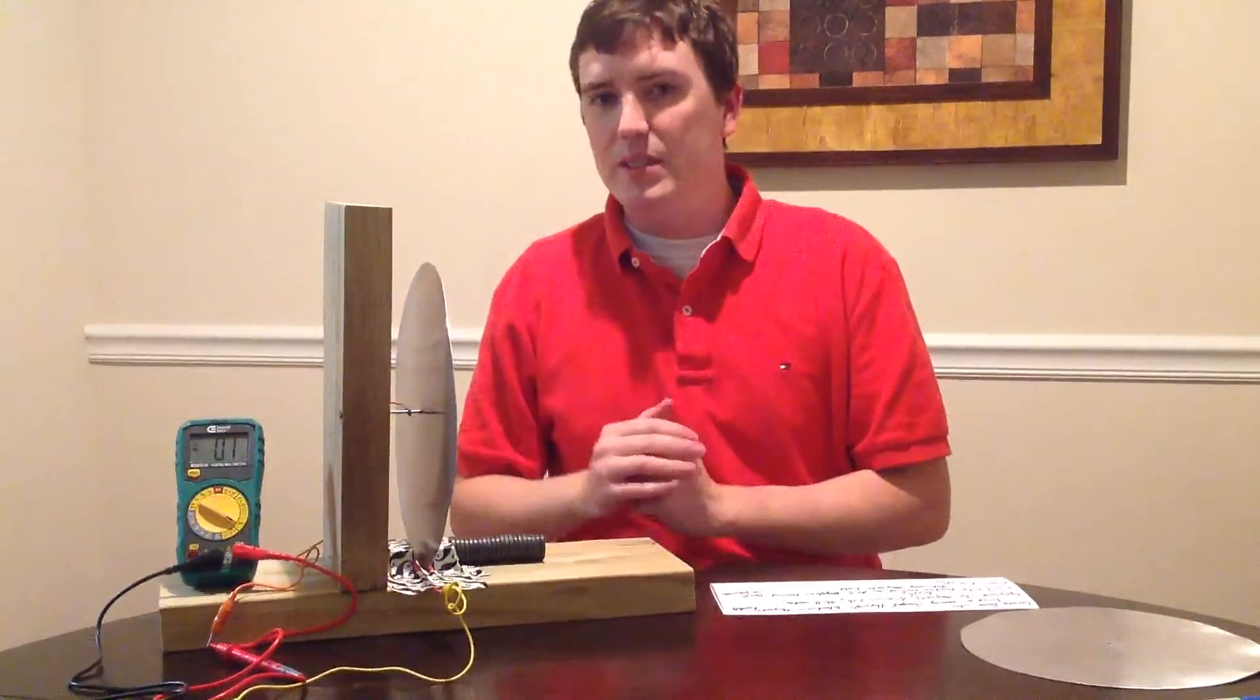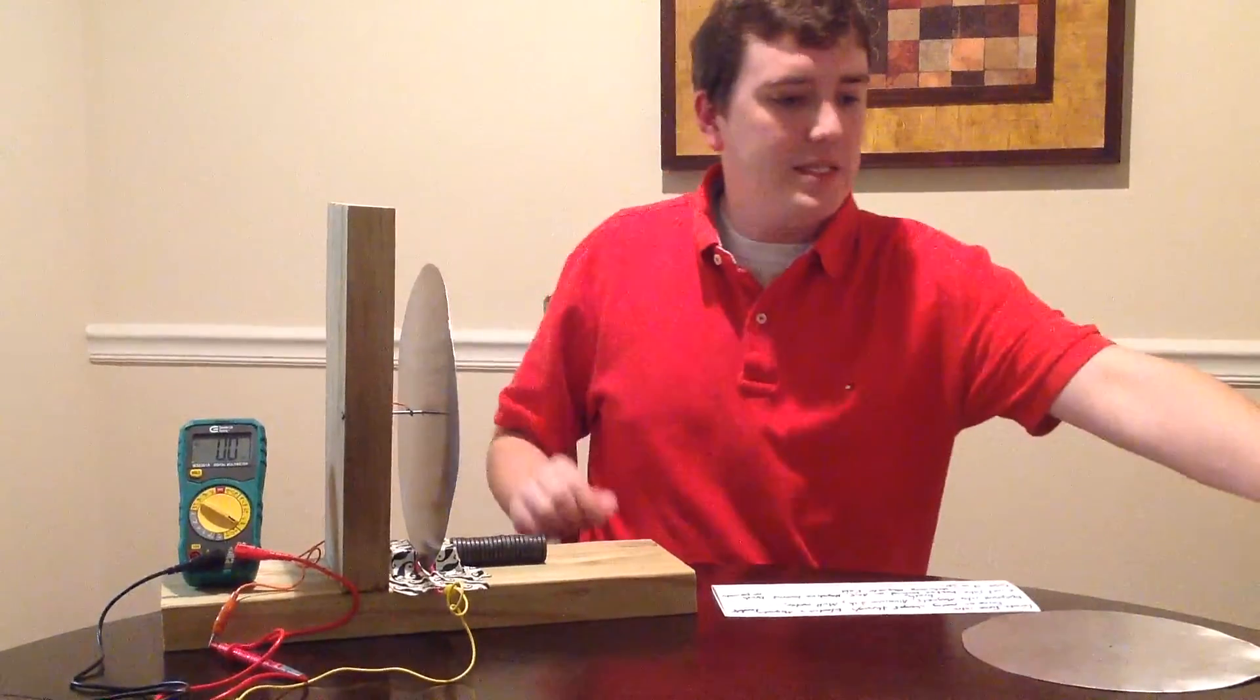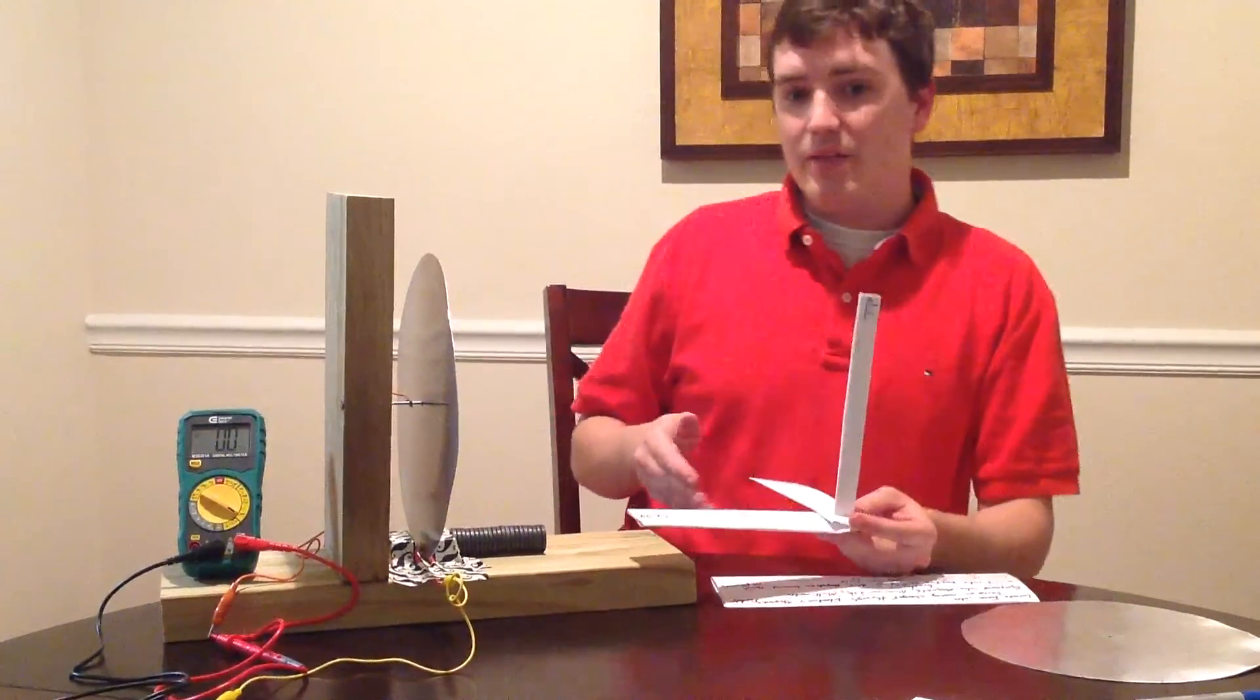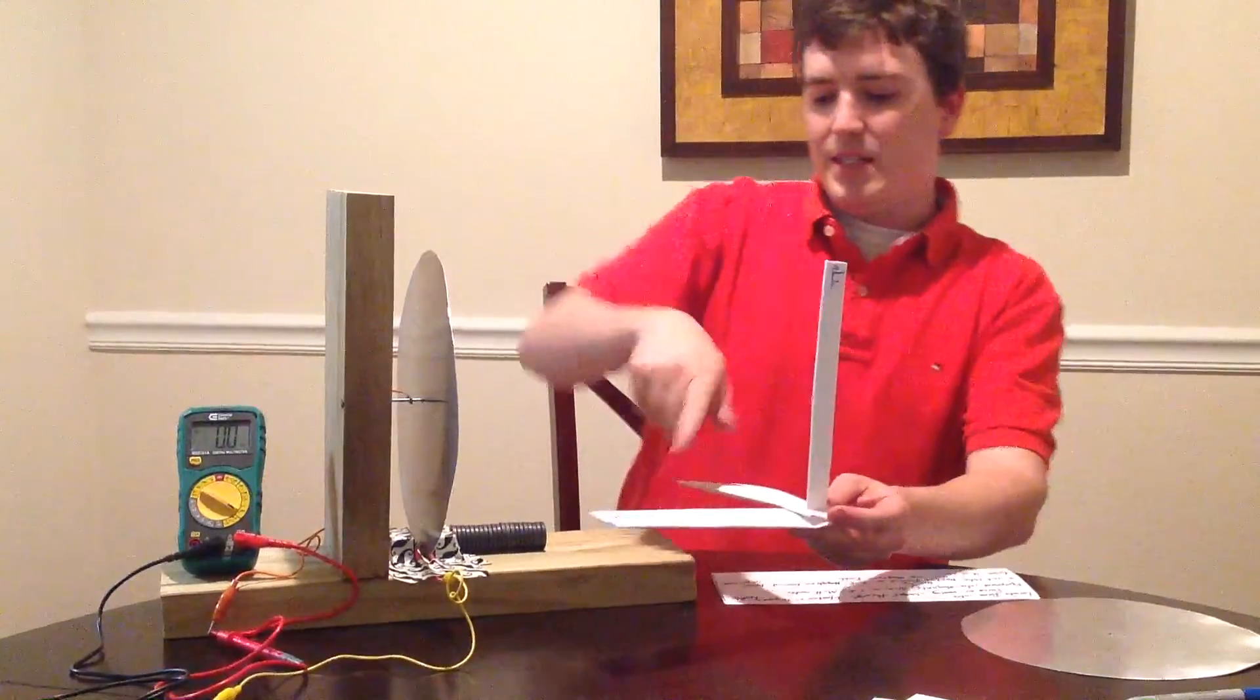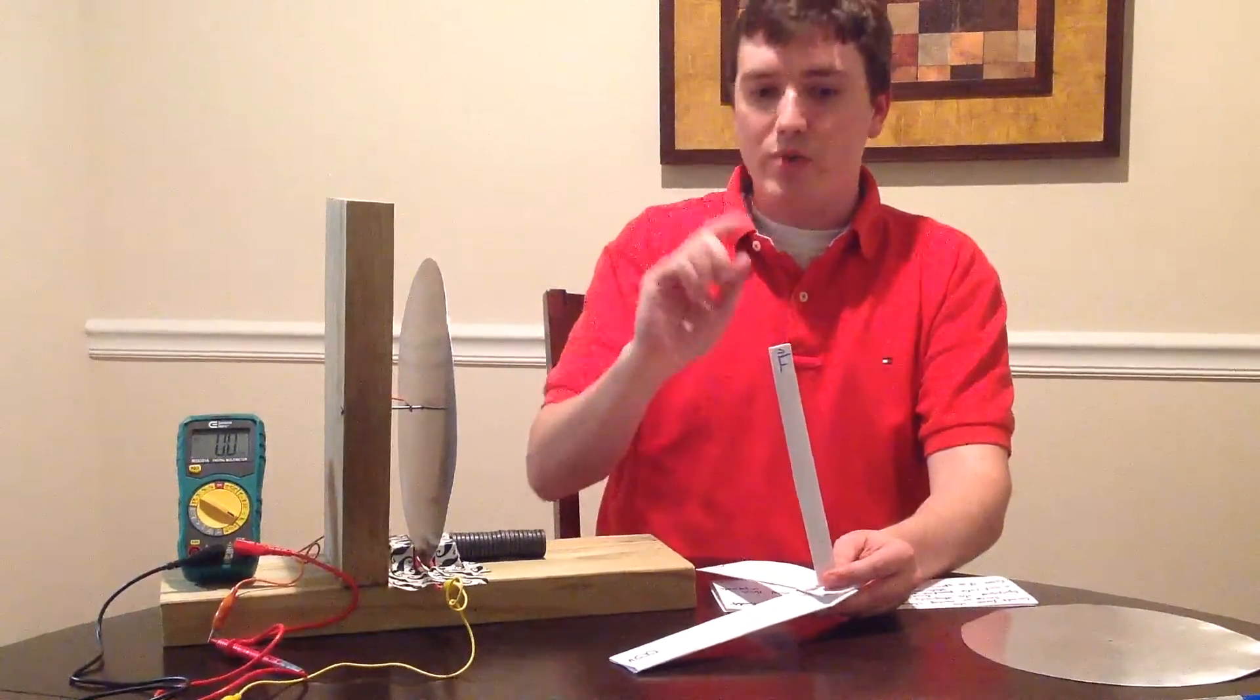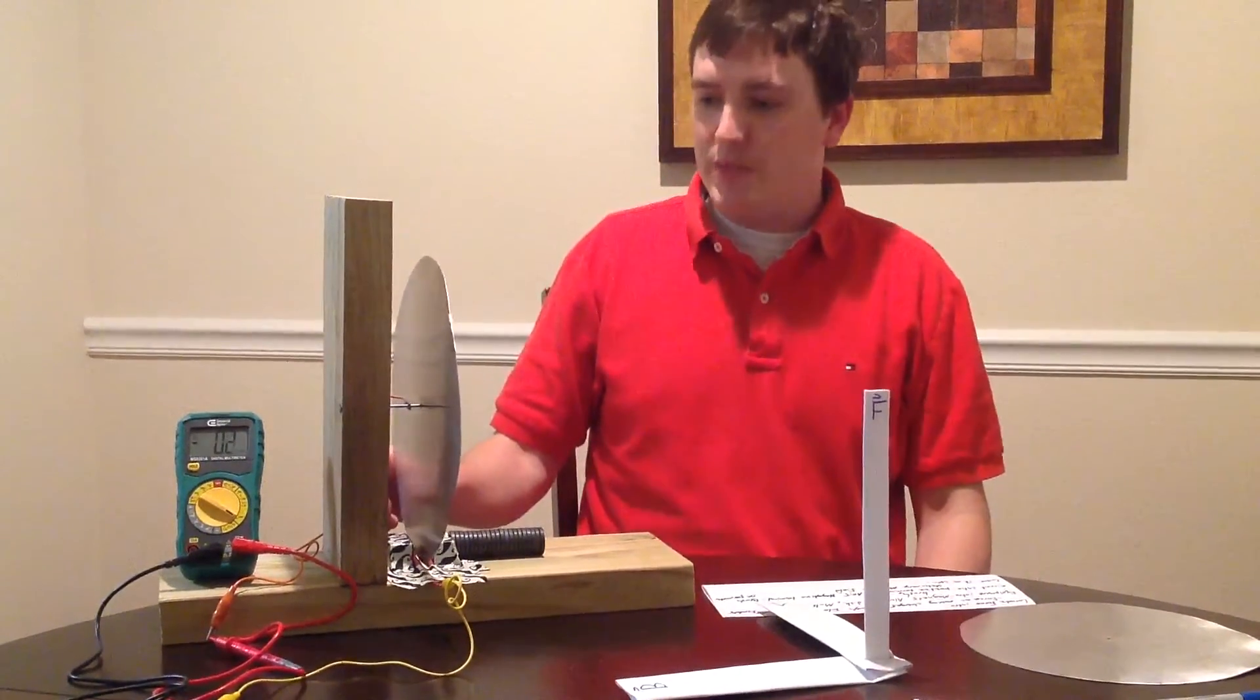we are going to see if we can produce a voltage through the multimeter. Based on the right-hand rule, if we have a magnetic field intensity going this way and a velocity going back towards the wall, that should have a force on the moving charges upwards. Let's try to get a positive voltage by spinning that.